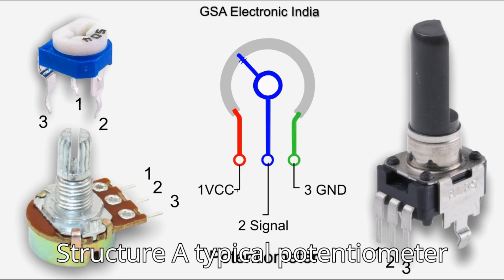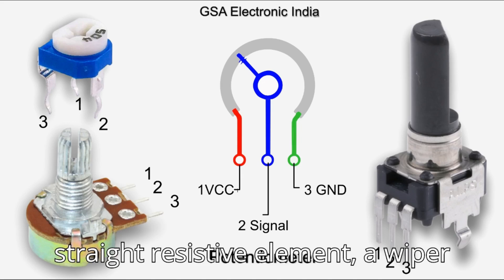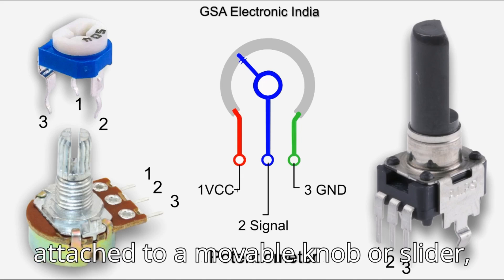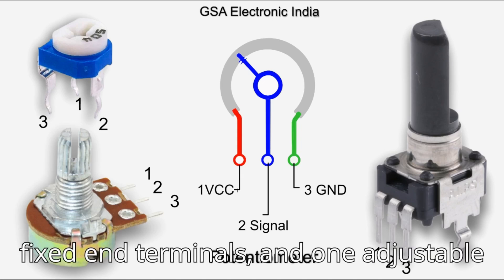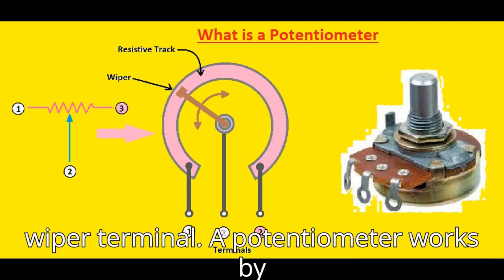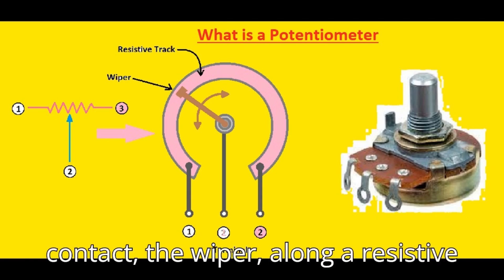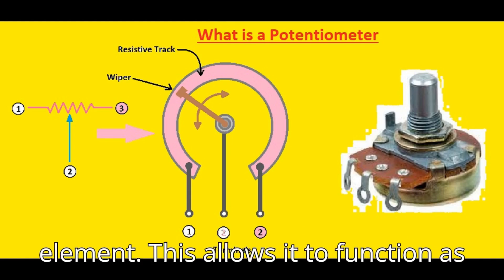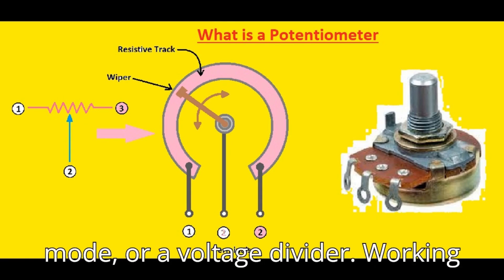A typical potentiometer structure includes a circular or straight resistive element, a wiper attached to a movable knob or slider, and terminals for electrical connections — two fixed end terminals and one adjustable wiper terminal. A potentiometer works by varying the position of a movable contact, the wiper, along a resistive element, allowing it to function as either a variable resistor (rheostat mode) or a voltage divider.